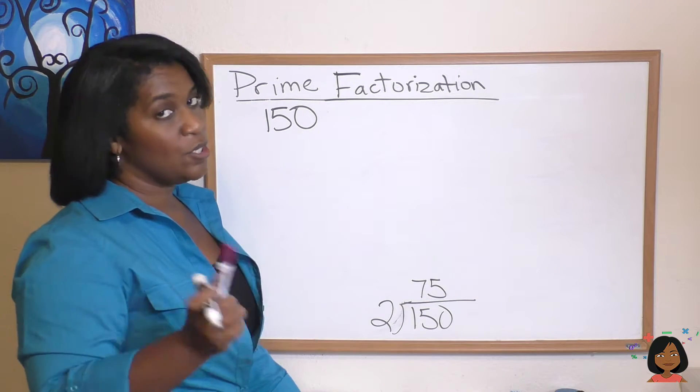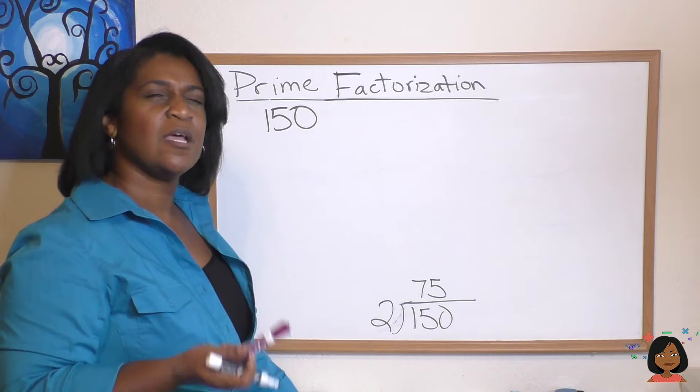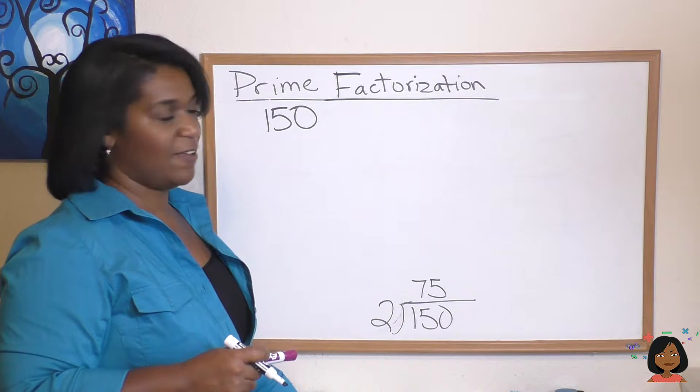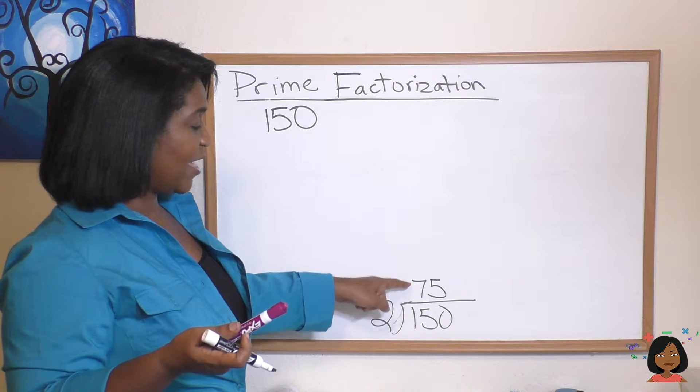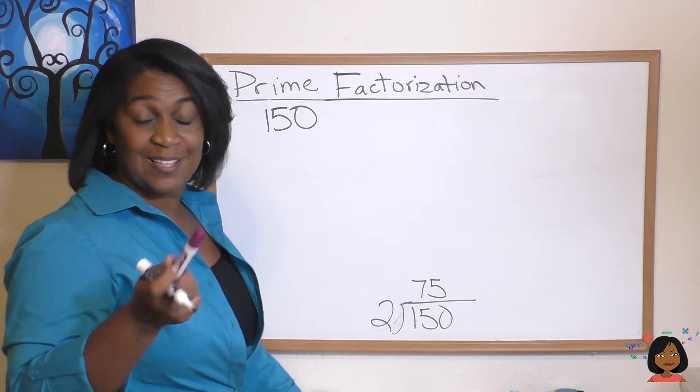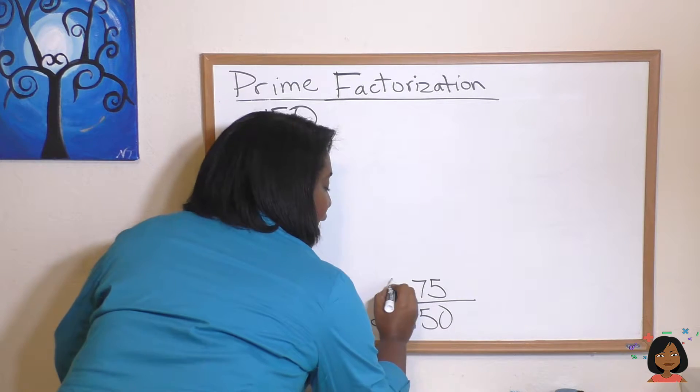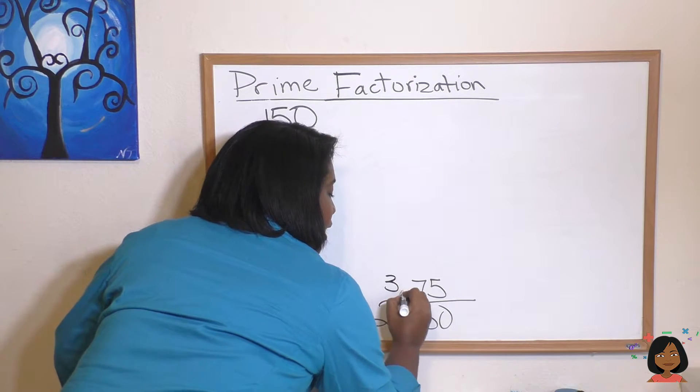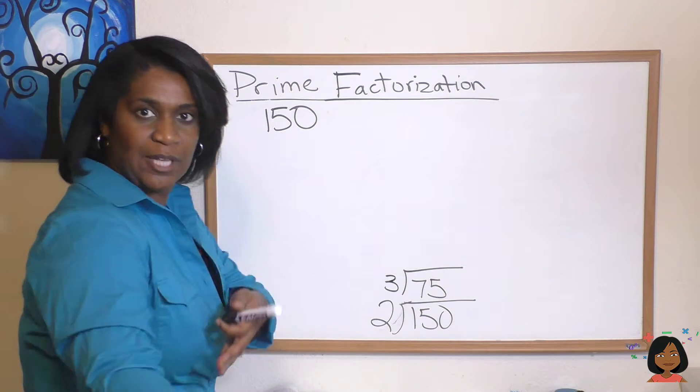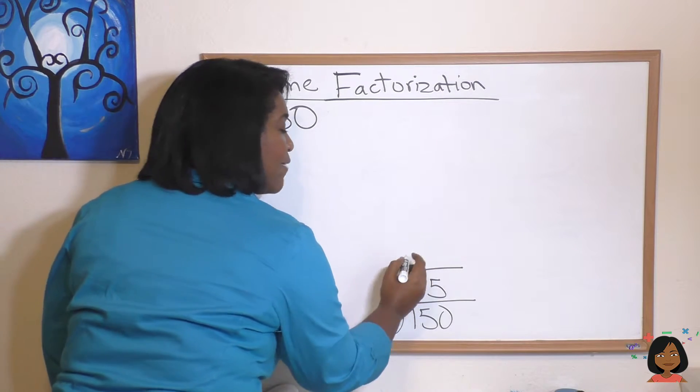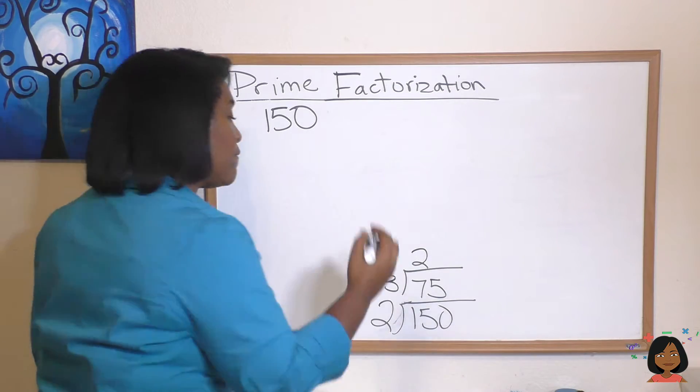Does 2 go into 75? No, it does not. Now I go to the next prime number, which is 3. And I see, does 3 go into 75? Remember that a divisibility test for 3 is you add the digits together. 7 and 5 is 12. That means 3 can go into 12. So 3 can go into 75. So I'm going to do it again. I'm going to put my 3 here and there's my division bar again. 3 into 75. Let's do the mental math. 3 goes into 7 two times with one left over. 3 goes into 15 five times.